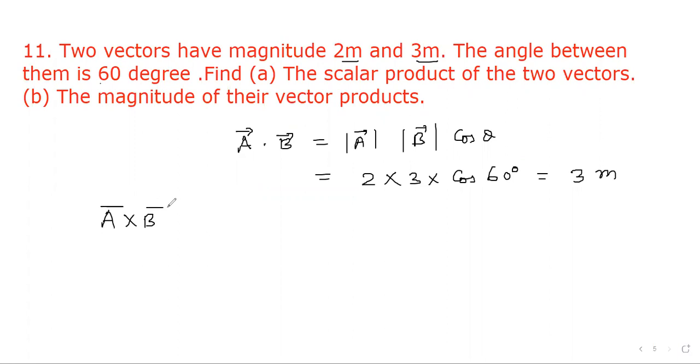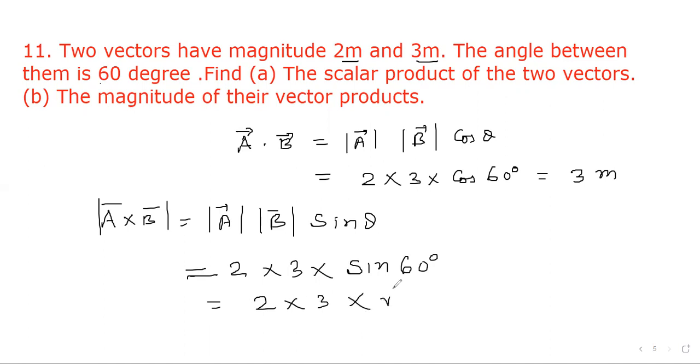Now we have to find out vector product. Because components are not given, we must write modulus A cross B equal to modulus A times modulus B times sine theta. We put the values: modulus A is 2 into 3 into sine 60 degree. Sine 60 degree is root 3 by 2. 2 into 3 into root 3 by 2, so 2 will cancel out and we will get 3 root 3 meters. And that is our answer. Thank you for watching.